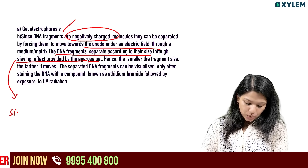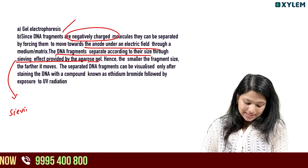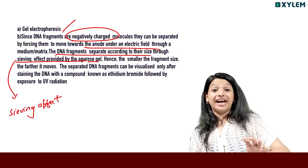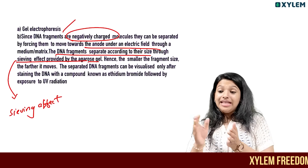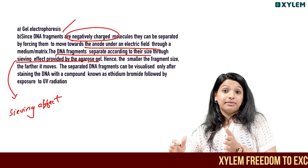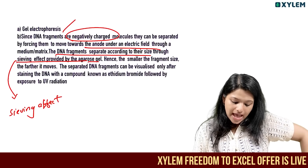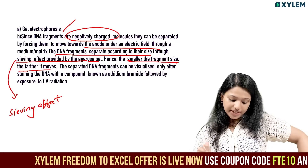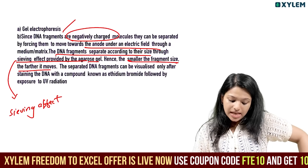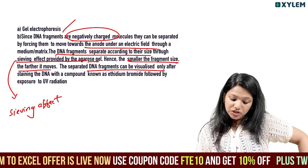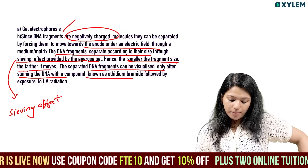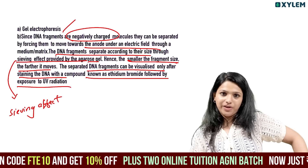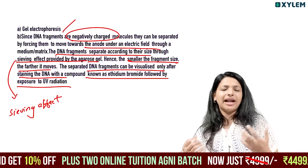This is the sieving effect of the agarose gel — DNA fragments separate by size. Smaller fragments travel farther. Separated DNA fragments can be visualized only after staining with ethidium bromide, followed by exposure to UV radiation.